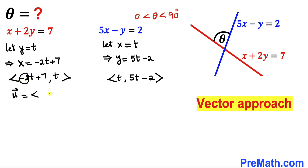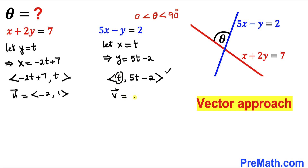So vector u equals negative 2, comma 1. Likewise, vector v for the blue line is going to be equal to the coefficient of t which is 1, comma the coefficient for t which is 5. So vector v equals 1, comma 5.